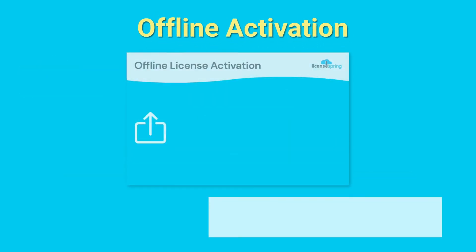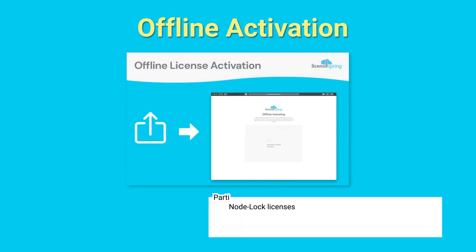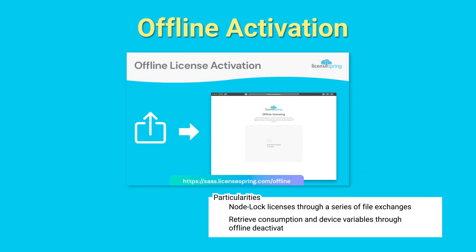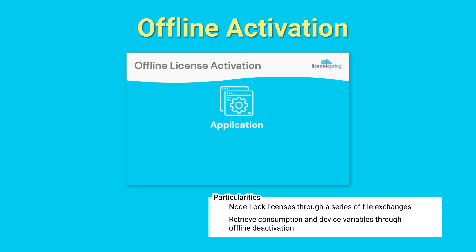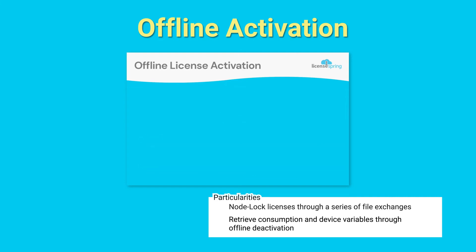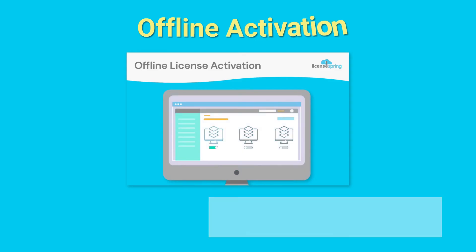Offline license activation: licenses can be activated on computers that do not have direct access to the internet. When the end user initiates the activation process in offline mode, they will generate a request file which needs to be uploaded to our offline portal to receive the license file. This file can only be used on the device that initiated the request.